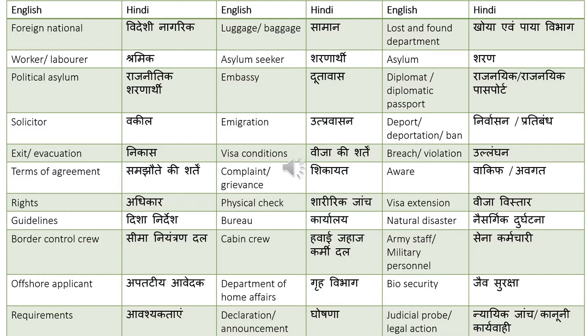Requirements — avashaktayin. Luggage or baggage — saman. Asylum seeker — sharanarthi. Embassy — dutawas. Emigration — uthpravasan. Visa conditions — visa ki shartain. Complaint or grievance — shikayat. Physical check — sharirik jaanj. Bureau — karyale. Cabin crew — hawai jahaz karmi dal. Department of Home Affairs — griha vibhaag.